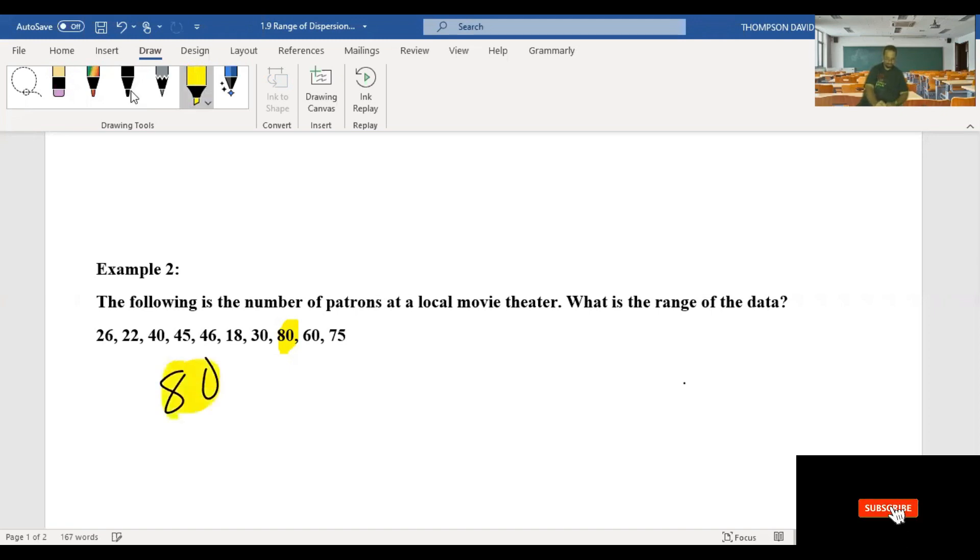Let's find our smallest number, which in this case I see it looks like it's 18. We'll highlight that in green, just like in the last example. Let's subtract 80 minus 18. And we have a range of 62.